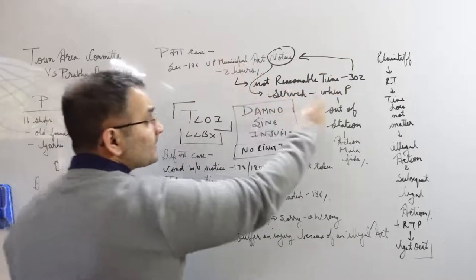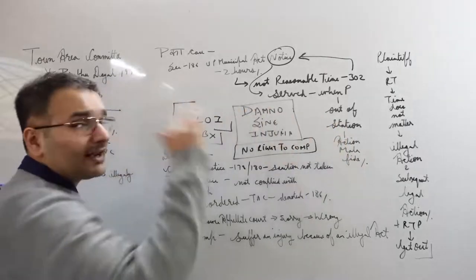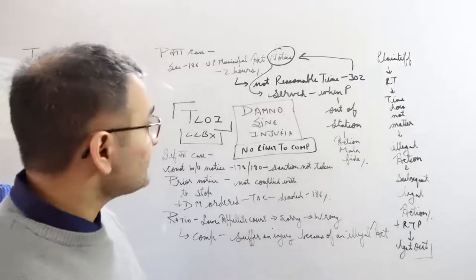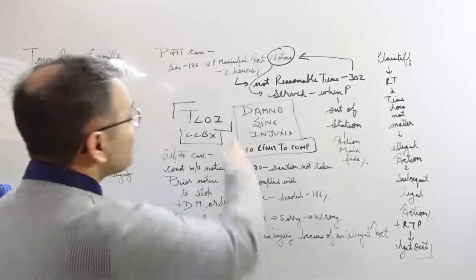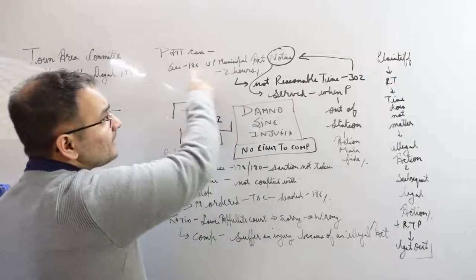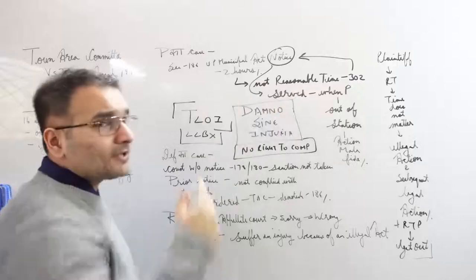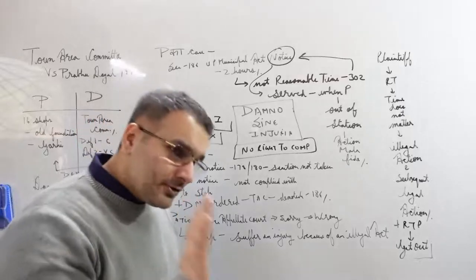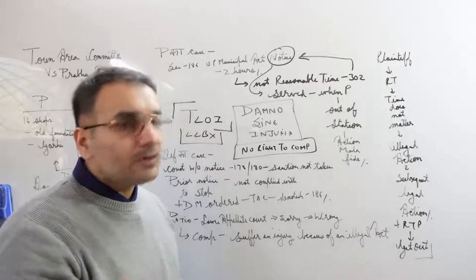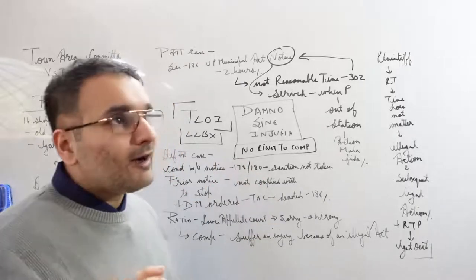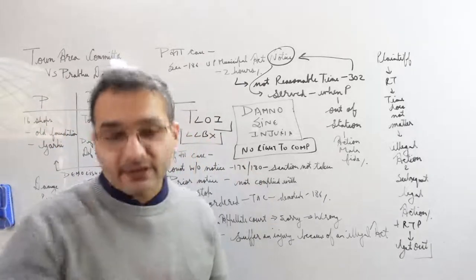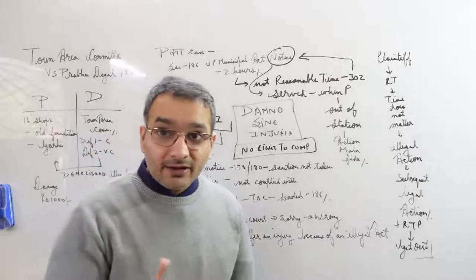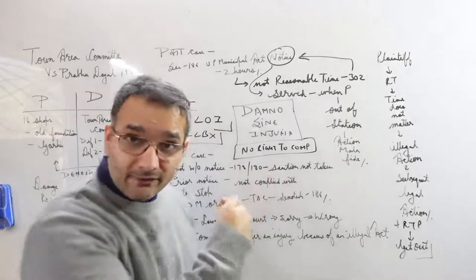Under the provisions of the relevant act, the plaintiff contended that I was not served a notice, and it was only a notice of 2 hours which is not a reasonable time under section 302. It was served when I was out of station, so the action was malafied. This is pretty much the plaintiff's contention. All of this, to tell you very honestly, it's practically impossible to remember all of this. You can't be expected to remember the provisions of a UP Municipal Act. If you do remember in the exam, great, but if you don't, reframe it, be smarter. That's not what we are testing you on - we're testing you on Damno Sine Injuria basically, and we are coming to that now.